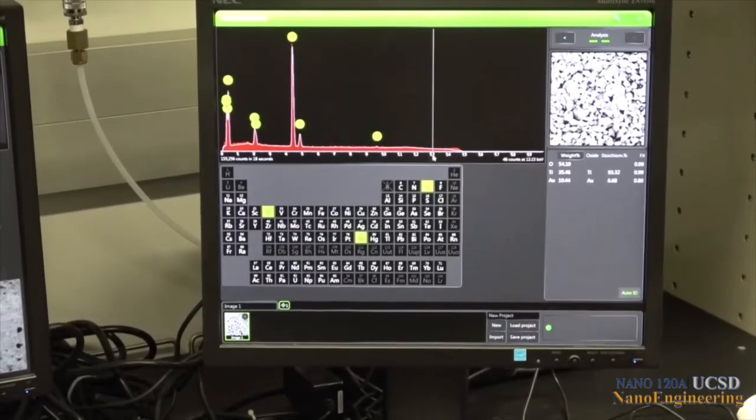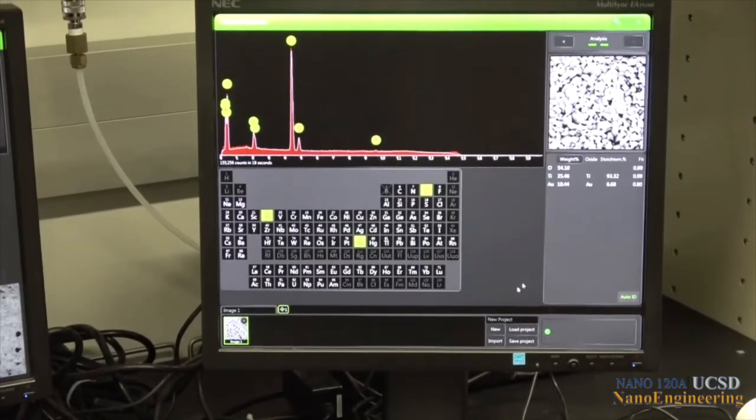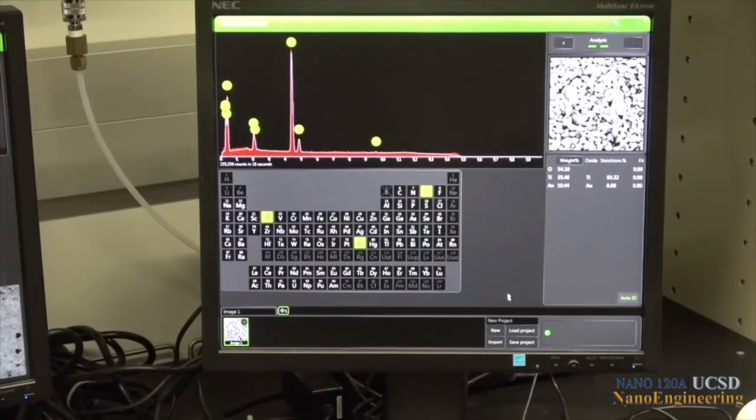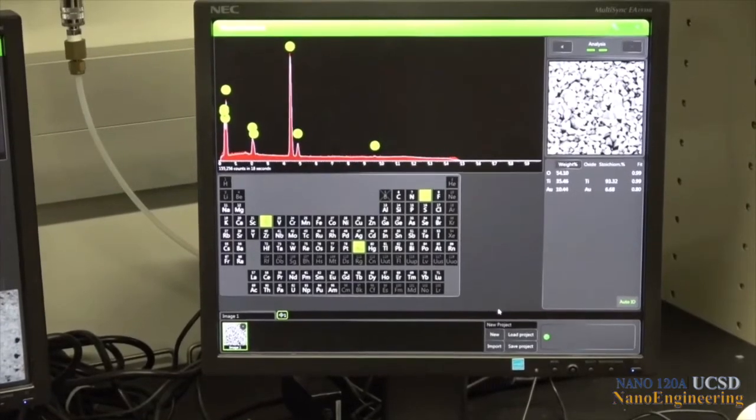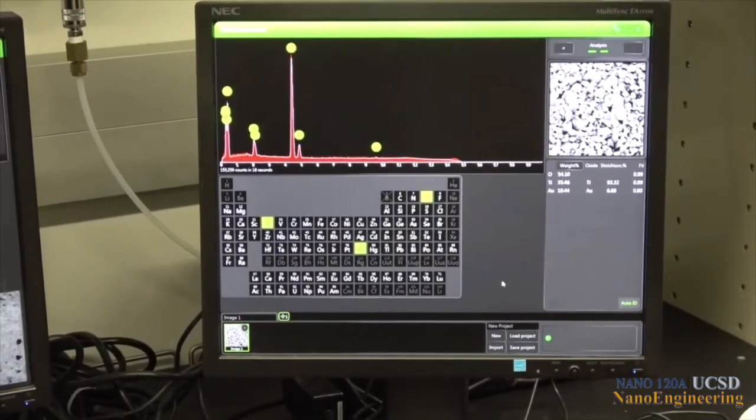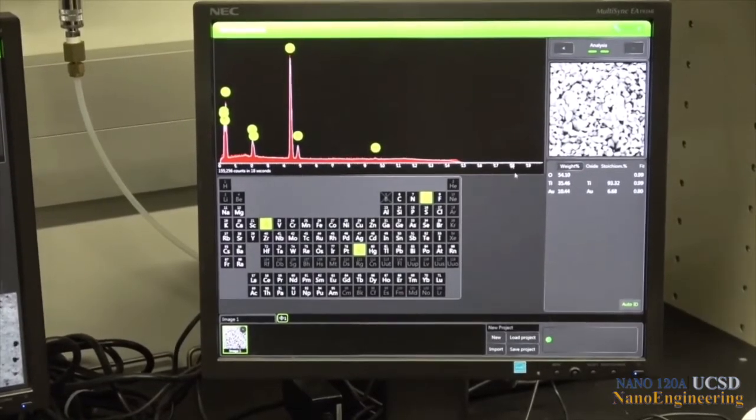In our demonstration of the X-ray EDS system we focused on the qualitative analysis of a fractured surface sample. That is, we were able to identify what elements are present in our sample. However, a fracture surface with its topographic features is not the best candidate sample for accurate quantitative X-ray analysis. That is, for identifying how much of each element is present.